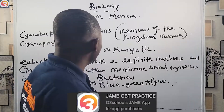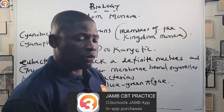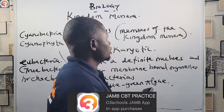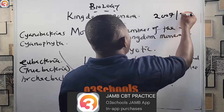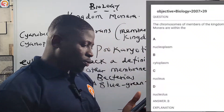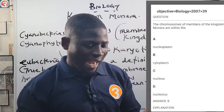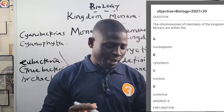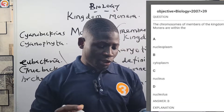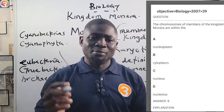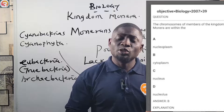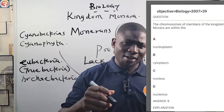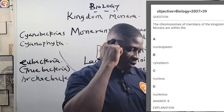Now let's look at some questions from the JAMB app. This is a 2007 question, number 39: 'The chromosomes of members of Kingdom Monera are within a) nucleoplasm, b) cytoplasm, c) nucleus, d) nucleolus.' The correct answer is B — cytoplasm — because monerans do not have a nucleus, so chromosomes are found floating in the cytoplasm.